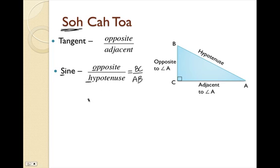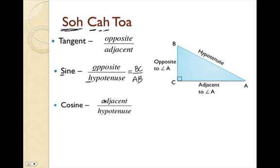Our last trig function we're going to learn today is cosine. Take a wild guess — we've got CAH: cosine, A, and H. Cosine is adjacent over hypotenuse. So with triangle ABC, cosine of angle A equals adjacent side AC over hypotenuse AB.